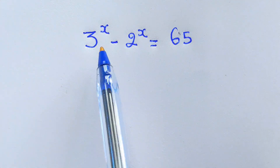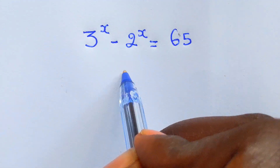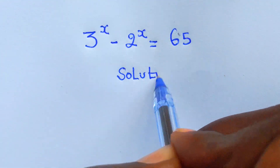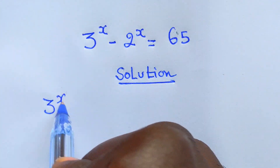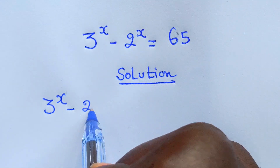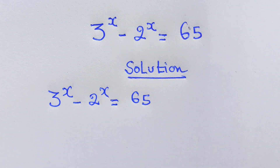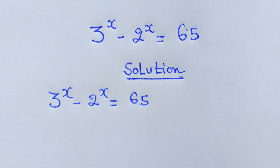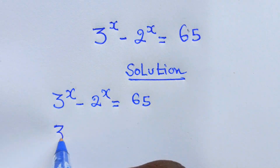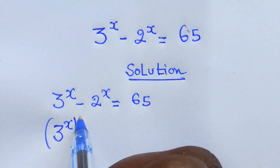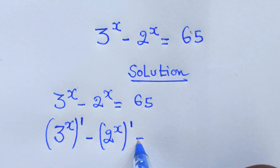We have the question: 3 power x minus 2 power x equals 65. We are supposed to find the value of x. We can write this as 3 power x times power 1, minus 2 power x times power 1, which equals 65.